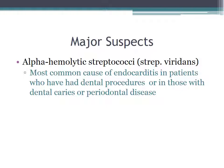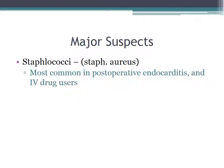So who are the major suspects with bacterial endocarditis? We have alpha hemolytic strep or strep viridans. That's the most common cause of endocarditis in patients who have had dental procedures or in those with dental caries or periodontal disease. The usual suspect in post-operative endocarditis, as well as IV drug users, is staphylococci, particularly staph aureus.